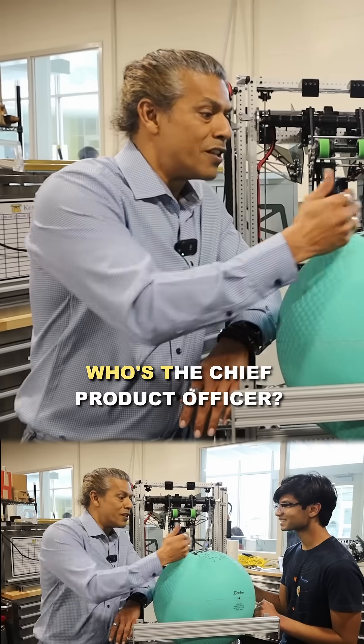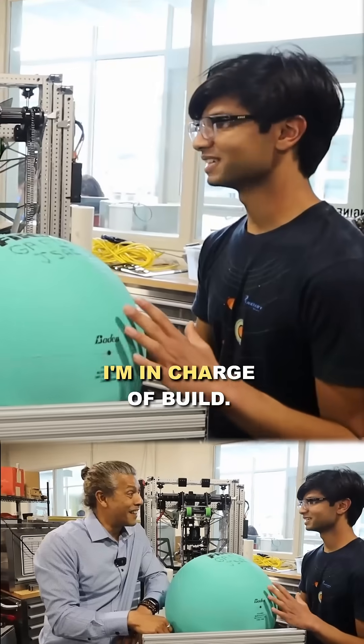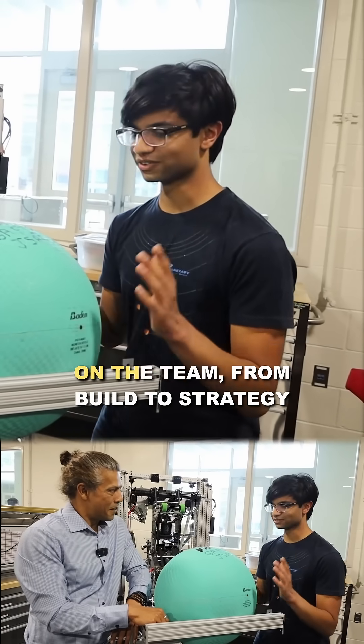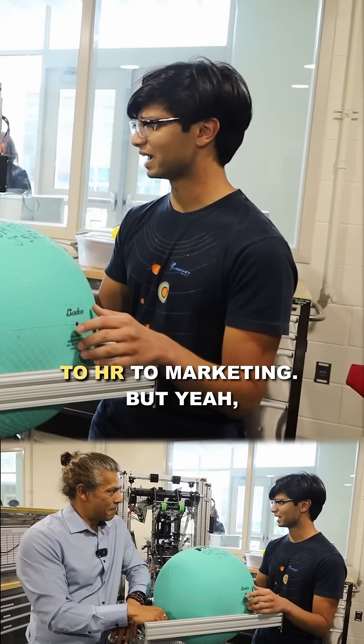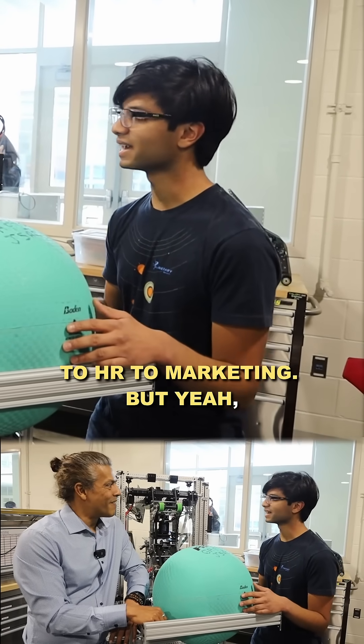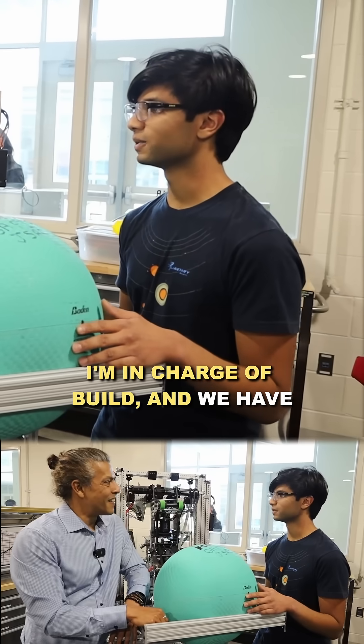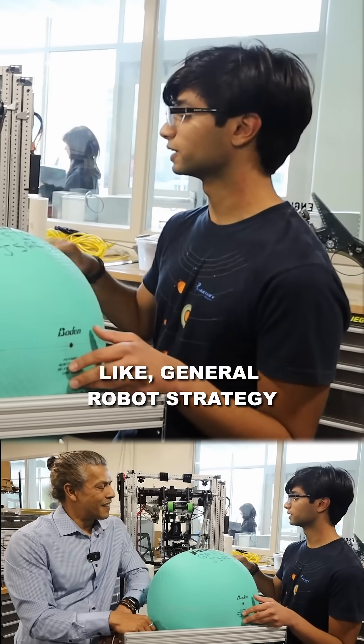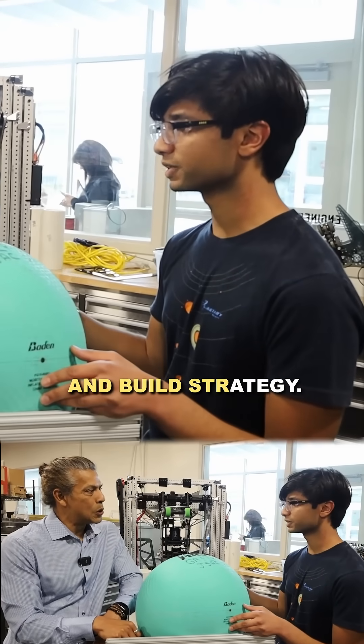Who's the chief product officer? I'm in charge of build. We have eight captains on the team—from build to strategy to HR to marketing. I'm in charge of build, and we have another strategy captain who's in charge of general robot strategy and build strategy.